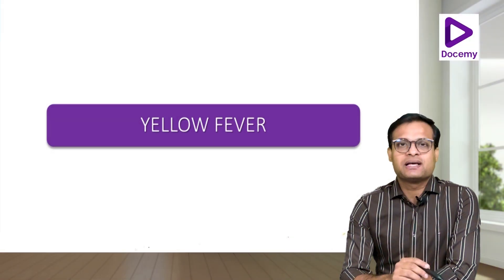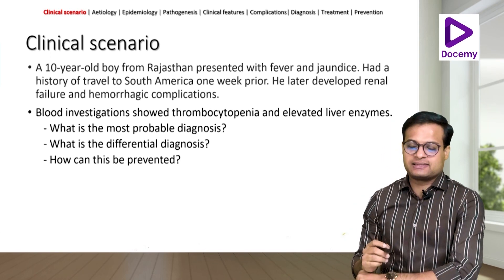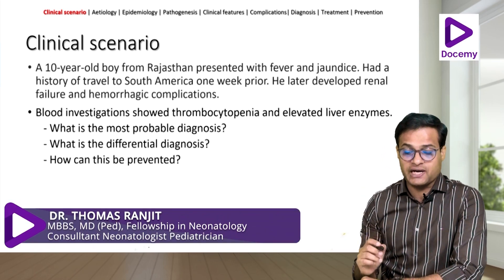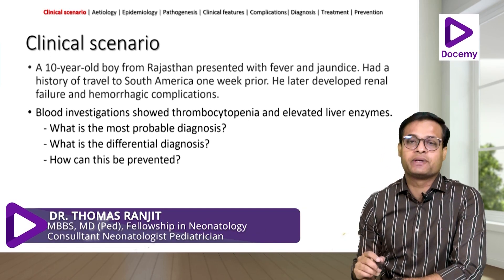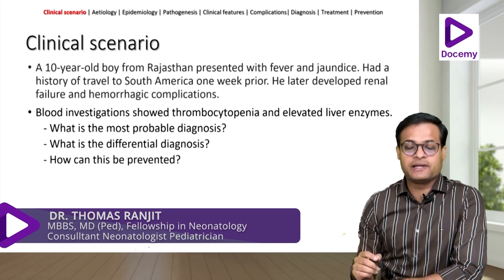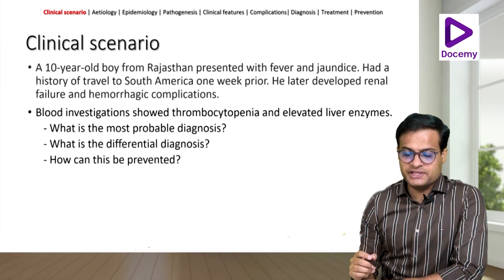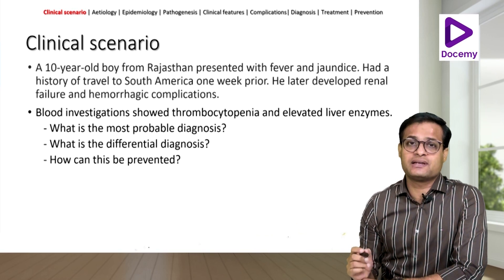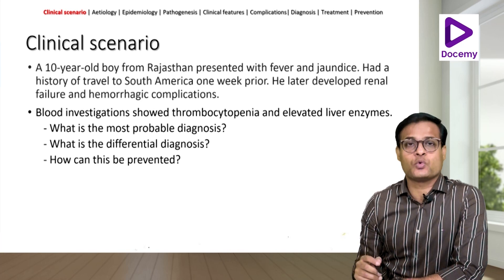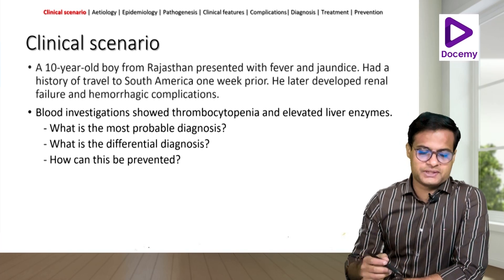Hello, today's topic is yellow fever. We have a 10-year-old boy from Rajasthan who presented with fever and jaundice. He had a history of travel to South America one week prior to this. He later developed renal failure and hemorrhagic complications. Blood investigation showed thrombocytopenia and elevated liver enzymes. So what is the most probable diagnosis? What are the differential diagnoses? And how can this be prevented?